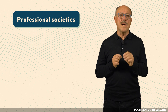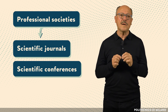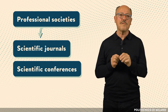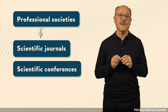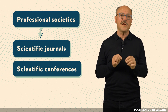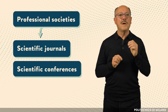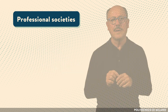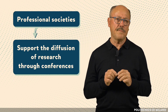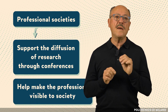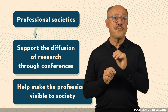Societies run both scientific journals and conferences. For example, the APS publishes Physical Review Letters. The IEEE publishes the IEEE Transactions on Computers and the IEEE Transactions on Software Engineering. The ACM publishes the Journal of the ACM and Communications of the ACM. Societies also support the diffusion of research through conferences, and help make the professions visible to society, for example through their prestigious awards.